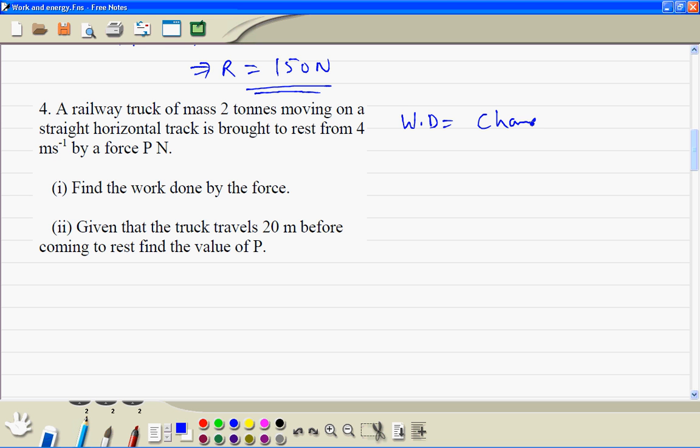The work done is change in energy. So in this case, this loss in kinetic energy, which is half times 2,000 times 4 squared, plus the 16,000.